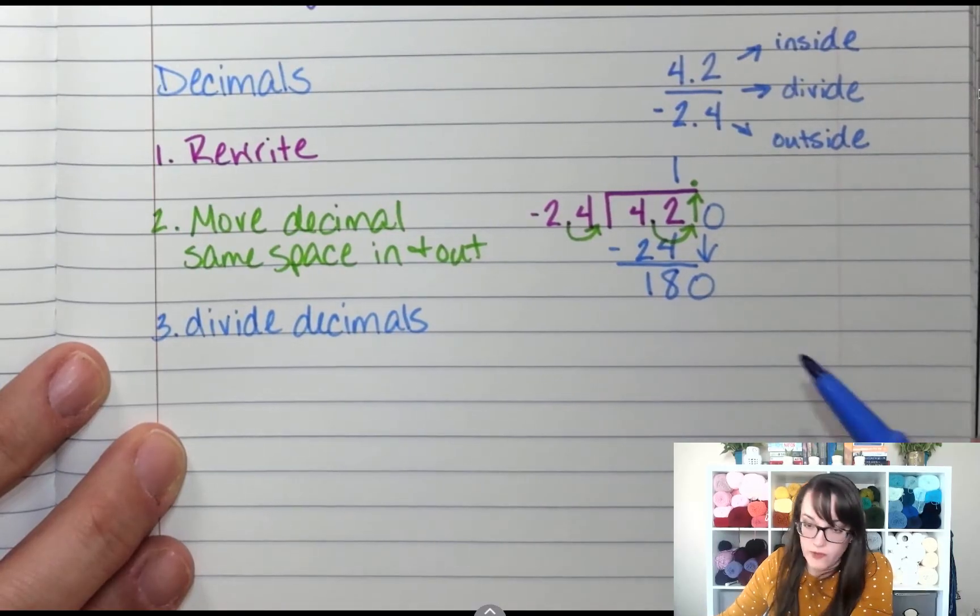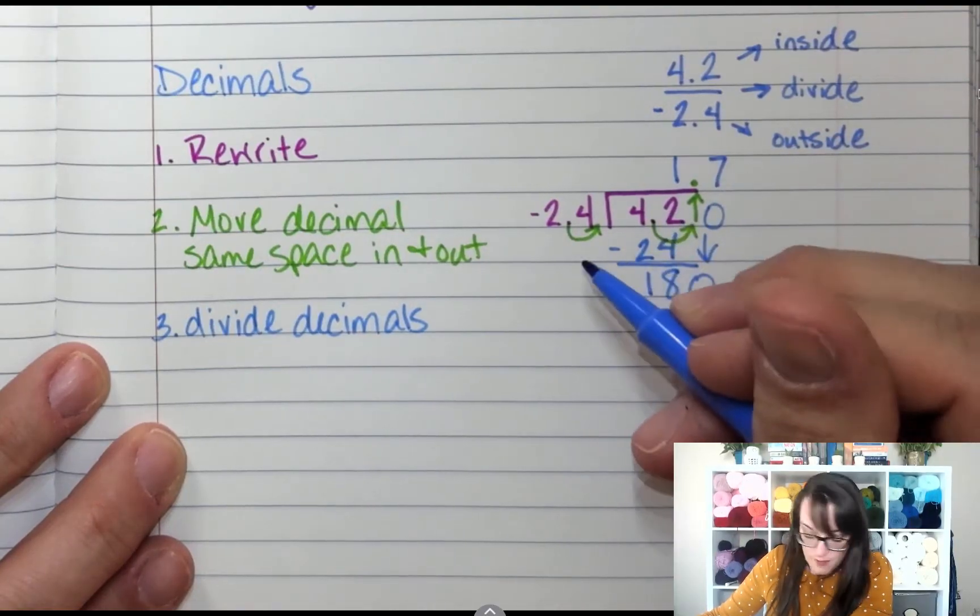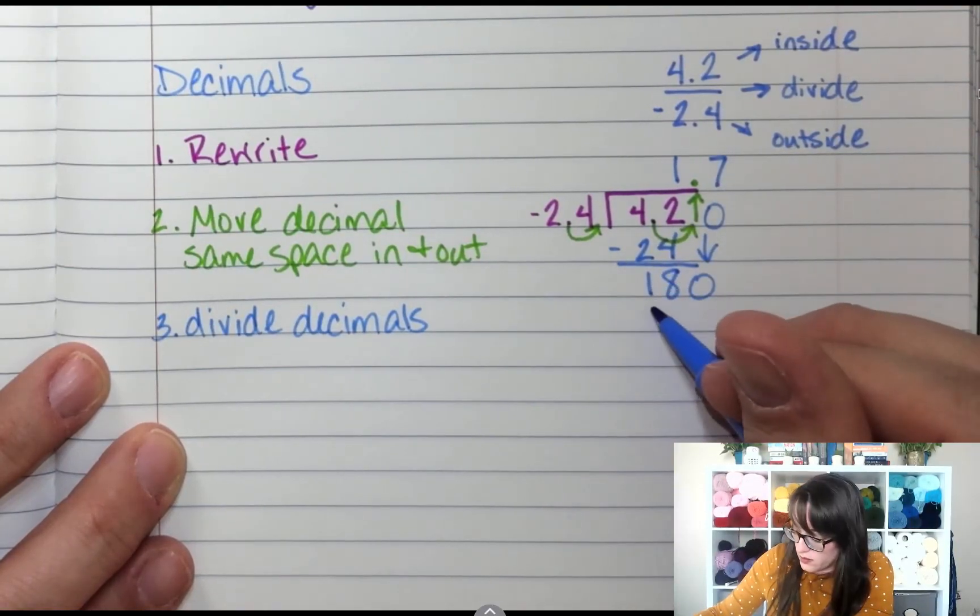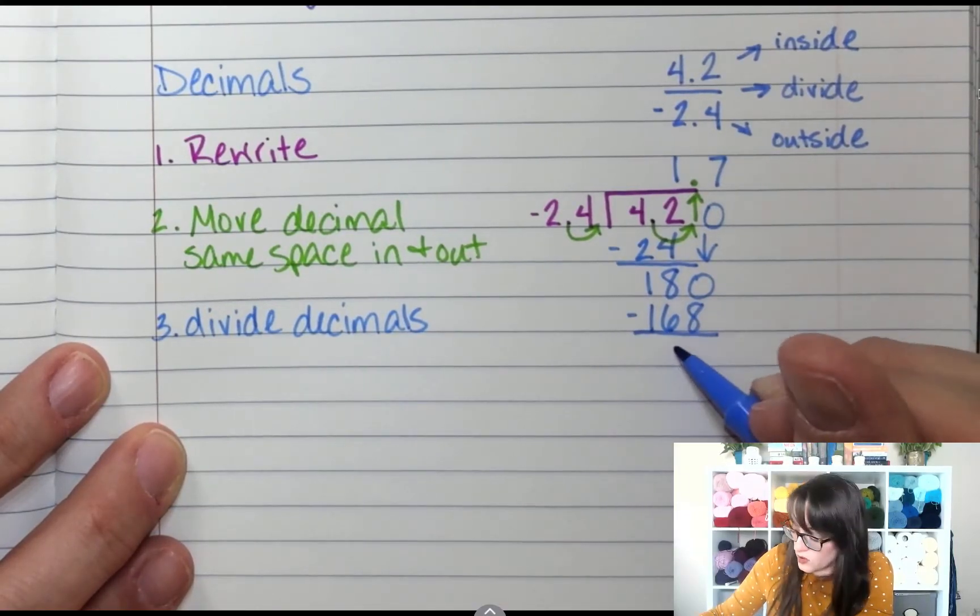How many times can 24 go into 180? 7 times. 7 times 24—168. Subtract—12.